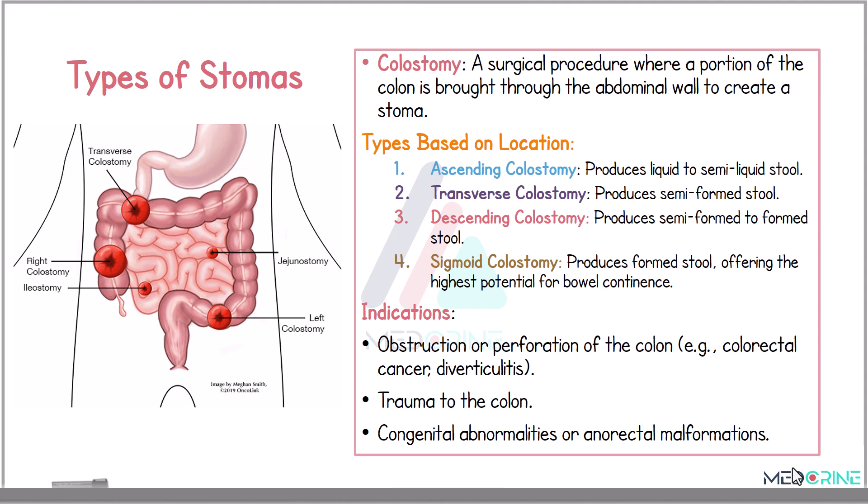An ascending colostomy produces a liquid to semi-liquid stool. A transverse colostomy produces semi-formed stool. A descending colostomy produces semi-formed to formed stool. And lastly, a sigmoid colostomy produces formed stool, offering the highest potential for bowel continence.